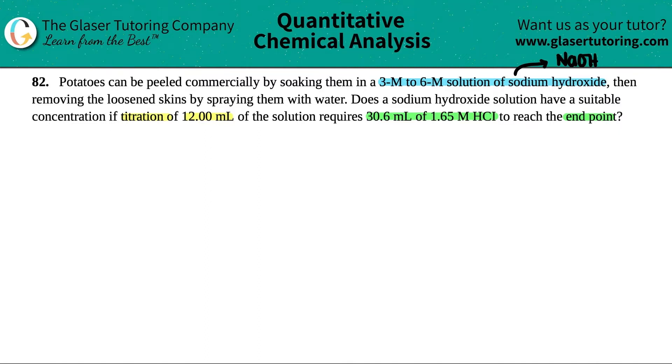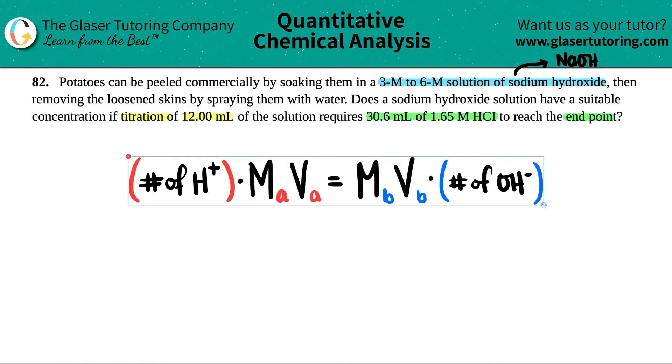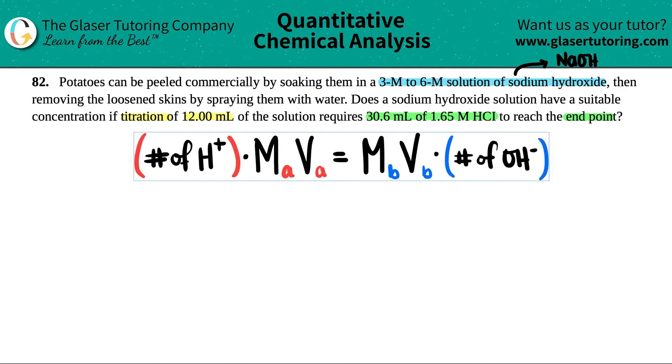Now whenever we're doing a titration problem, I always like to think of this formula right here. It's very simple. It goes back to the M1V1 equals M2V2 formula, but just a little bit different because we're dealing with acids and bases. This red side is for the acid, A for acid, and this B side is for the base.